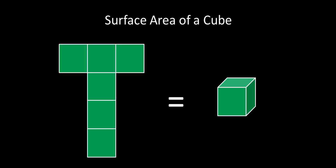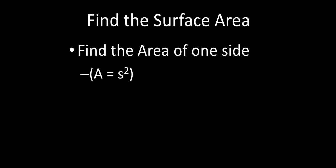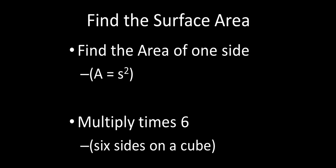So the surface area, if we're trying to calculate that, all we need to do is find the surface area of one of those squares, and then multiply it times six, because just like a die, you've got six sides on a cube.